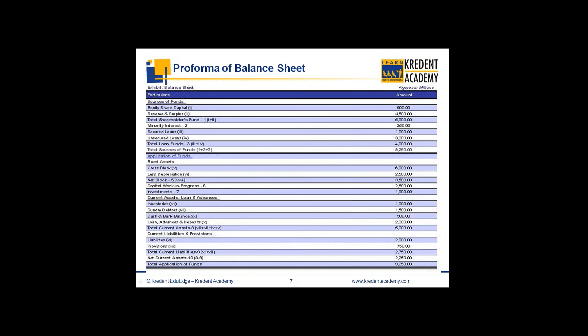Generally in common parlance, sales or revenues are referred to as the top line and profit or net earnings as the bottom line. Please note that higher revenue may not necessarily lead to higher profit.